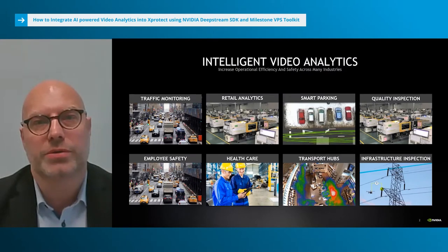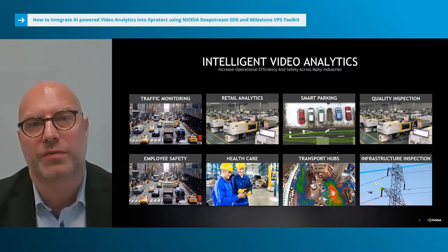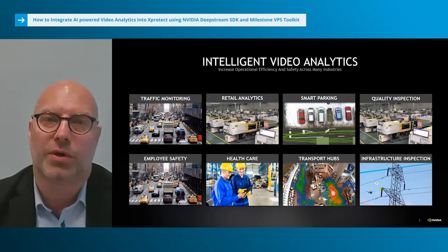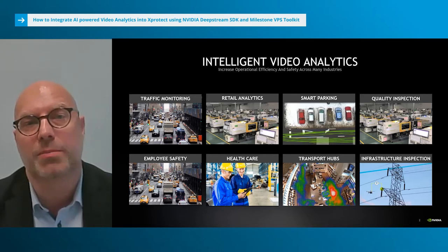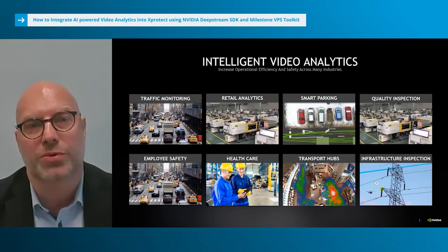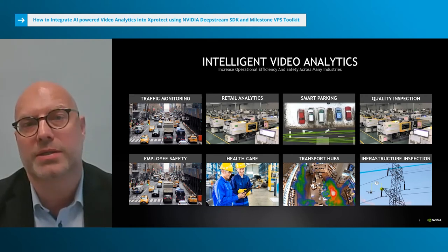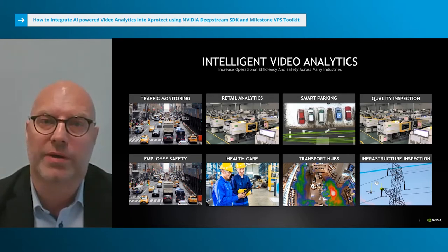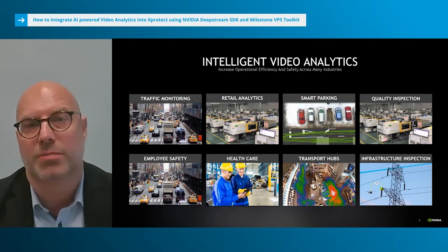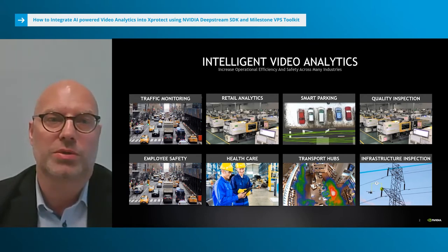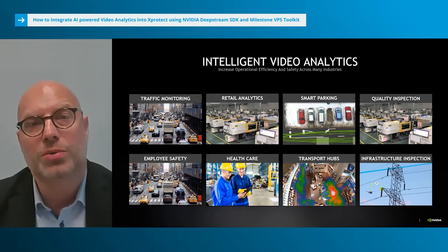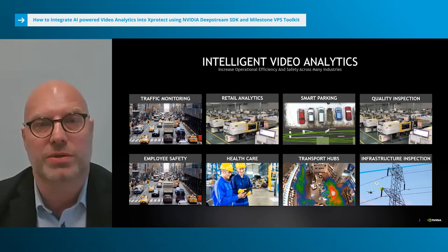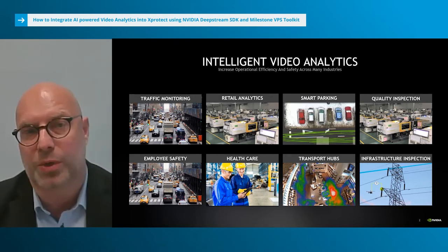Video analytics solutions based on AI are deployed across a wide range of industries to increase operational efficiency and safety. Some examples are monitoring of traffic to detect various traffic violations, or for a retailer to understand how to optimize shop layout by analyzing customer shopping patterns. It is also used on construction sites and factory floors to assist in workplace safety by detecting if employees are wearing necessary protection such as hard hats, protective vests or gloves, or if they are close to dangerous machines or vehicles. Other industrial use cases include automatic optical inspection using cameras at the production line for quality inspections such as quality of welding points or correct assembly of components.